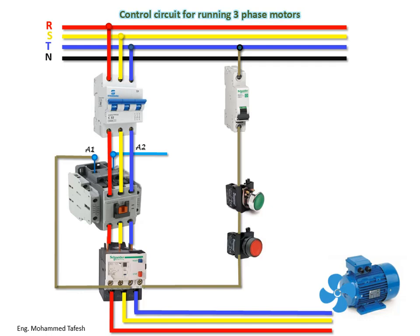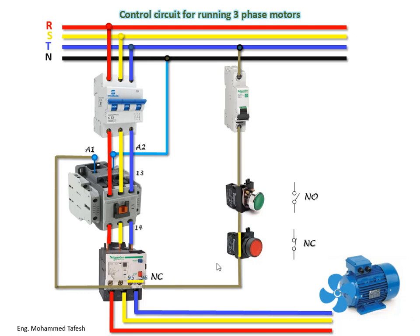The connection is then returned to the neutral line in the network. The push button ON is always normally open, and the stop switch is always normally closed. The overload contacts 95 and 96 are always in a closed state under normal conditions.